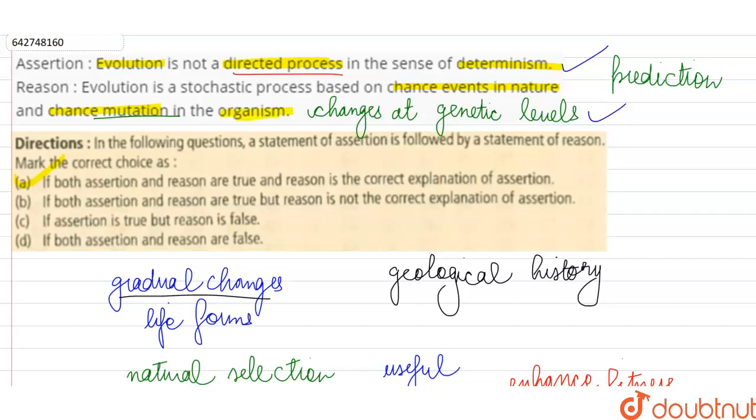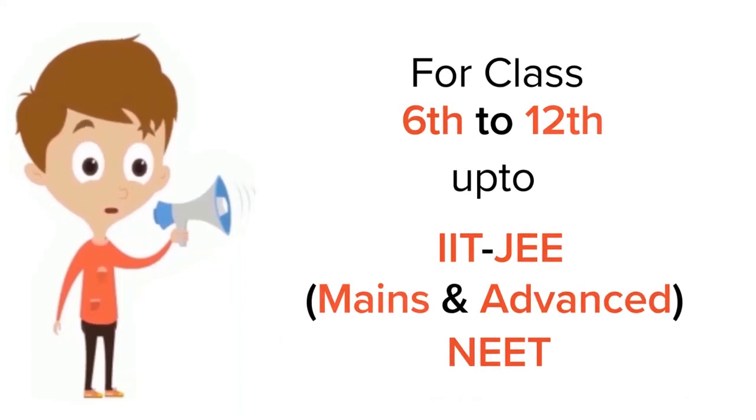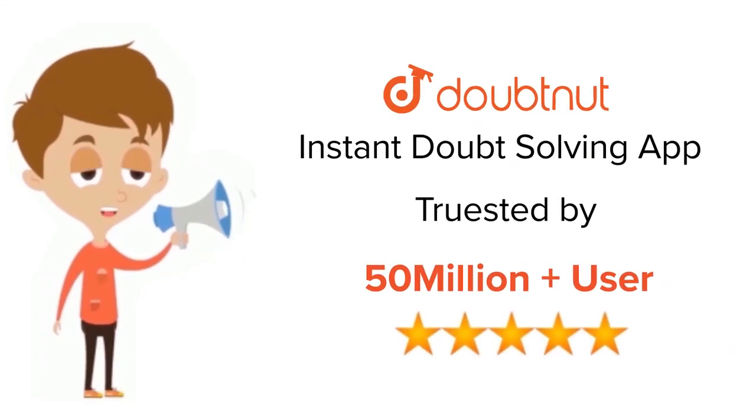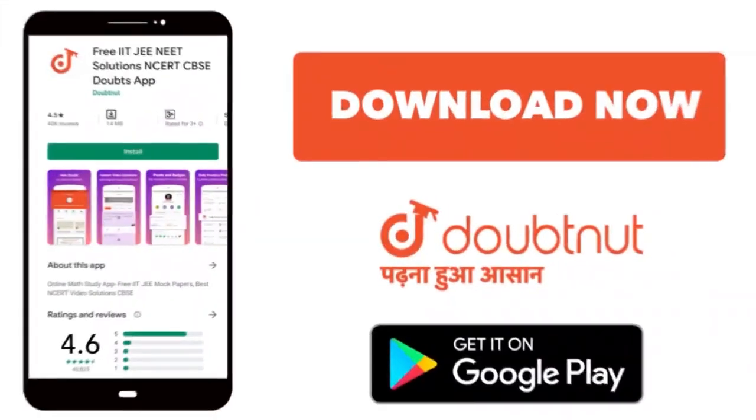So we will mark our correct answer option A over here. Assertion is also correct and reason is also explaining it correctly. For class 6 to 12, IIT JEE and NEET level trusted by more than 5 crore students. Download doubtnet app today.